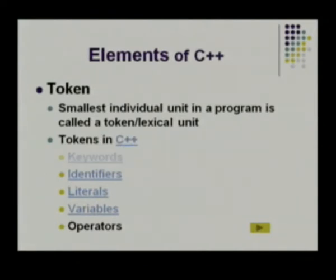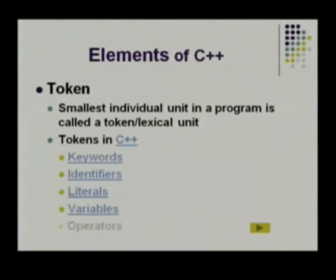The 5 tokens in C++ are: keywords, identifiers, literals, variables, and operators. Today we will be seeing about keywords, identifiers, literals, and operators.